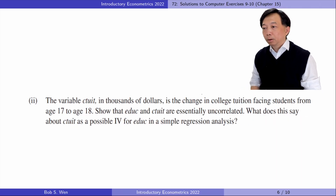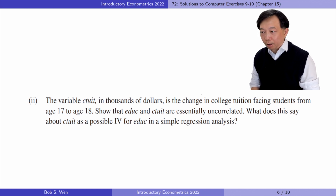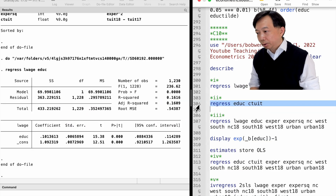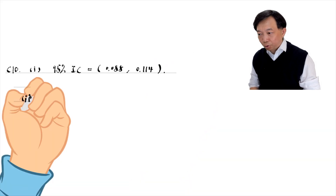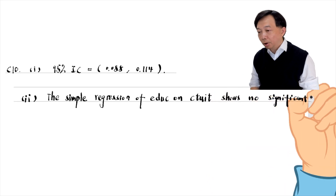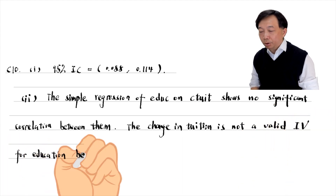In part 2, the variable c-tilde, in thousands of dollars, is the change in college tuition facing students from age 17 to 18, such that education and the change in tuition are essentially uncorrelated. The regression of education on the change in tuition shows no significant correlation between them. The change in tuition is not a valid instrumental variable for education because the instrument relevance requirement is not satisfied.